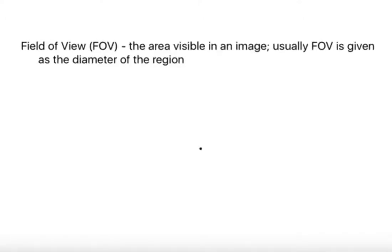In this segment we're going to talk about the field of view. The field of view is the area visible in an image. Usually field of view is given as the diameter of the region.